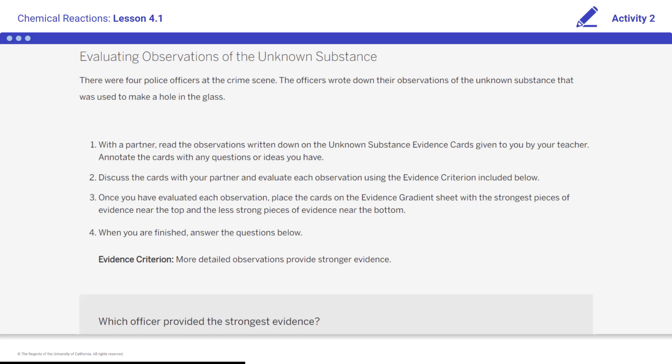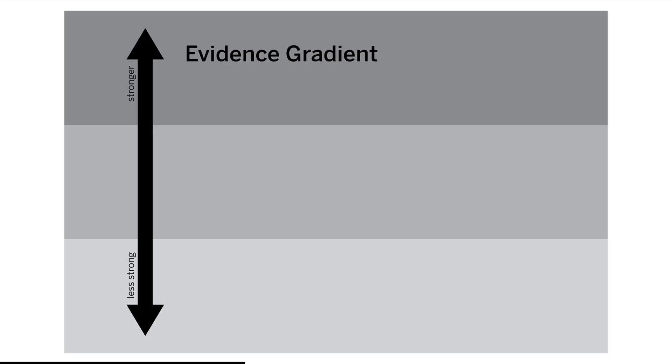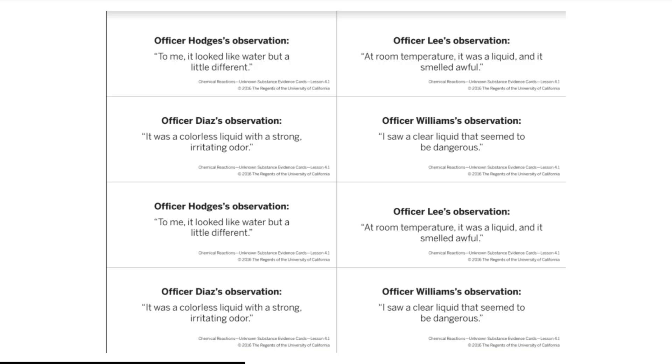Fortunately, four police officers observed the unknown substance and recorded their observations, so we have some evidence that might help us determine what this substance could be. Before we can use these observations to identify the unknown substance, however, we need to make sure that the evidence is strong. We will use the evidence gradient to help us decide which evidence is the strongest. In order to make a strong scientific argument, we need to have strong scientific evidence that supports our claim.